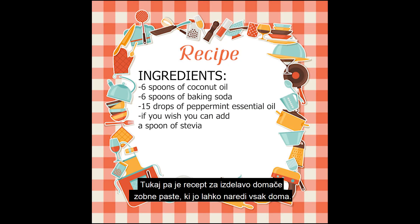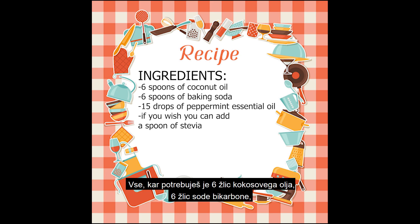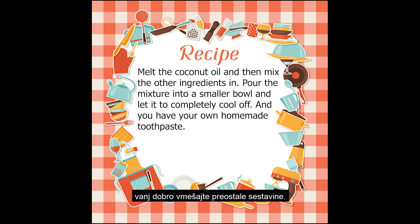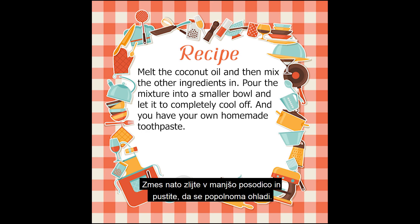Here is a recipe for a homemade toothpaste that anyone can make at home by themselves. The recipe is not difficult and it includes ingredients that you can find in any store. All you need are 6 spoons of coconut oil, 6 spoons of baking soda, 15 drops of peppermint essential oil, and if you wish you can also add a spoon of stevia. All you need to do is melt the coconut oil and then mix the other ingredients in. After that you pour the mixture into a smaller bowl and let it completely cool off, and then you have your own homemade toothpaste.